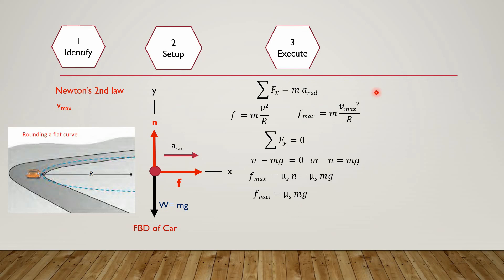We have to find the value of v maximum. Putting the value of f maximum as m v maximum squared over R equals mu s mg and simplifying this equation, we will get the value of v maximum squared over R.